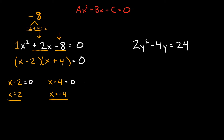Now let's check x = -4. Plugging in -4: (-4 - 2)(-4 + 4) = -6 × 0 = 0. Is negative 6 times 0 equal to 0? Yes it is. That's why we set each factor equal to zero — as long as one parenthesis equals zero, the whole expression equals zero.